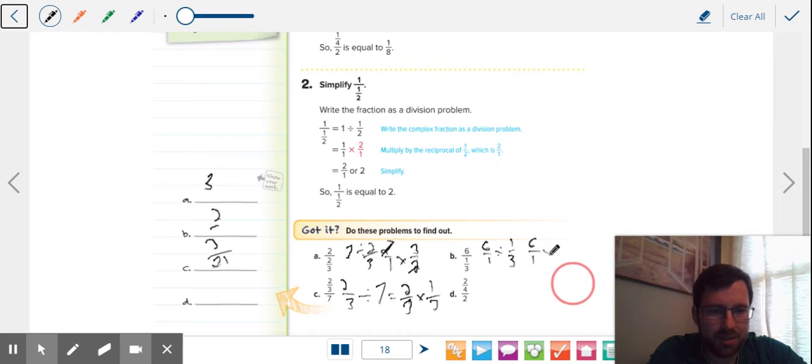Keep the first fraction, change to multiplication, flip the second fraction. Now, this is easy because the bottoms are ones. So six times three is 18. I'm going to cross this off. 18. I like when they come out as whole numbers, so it's a little easier to write in the end.